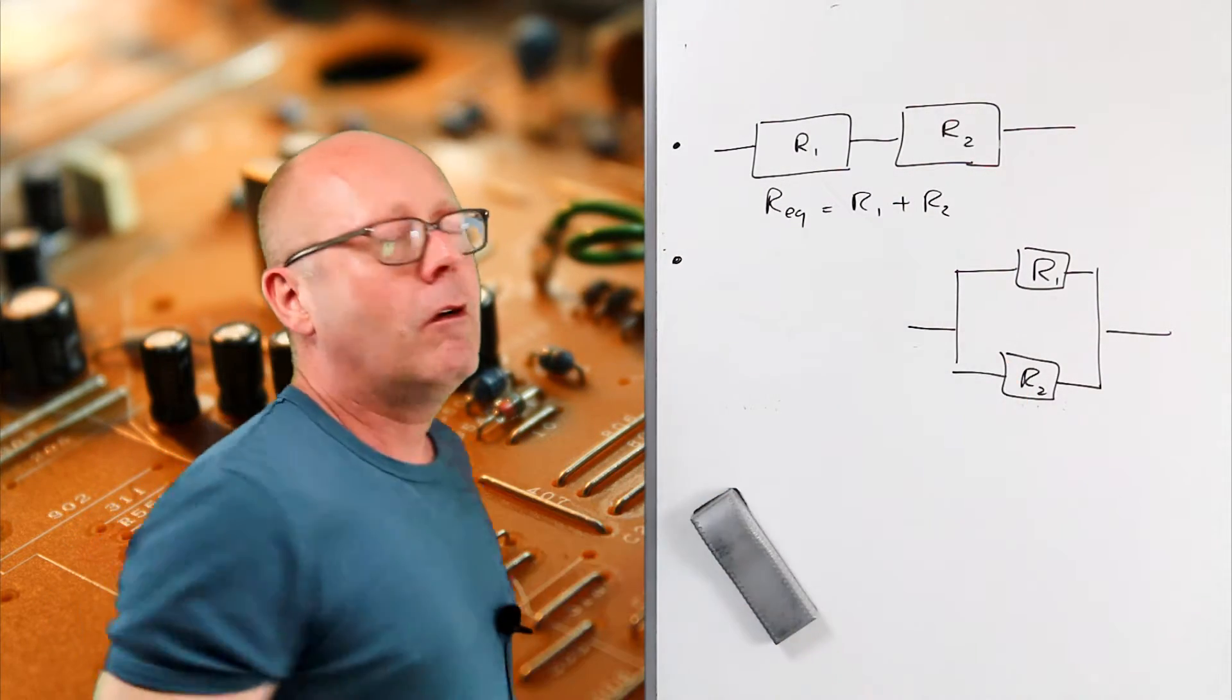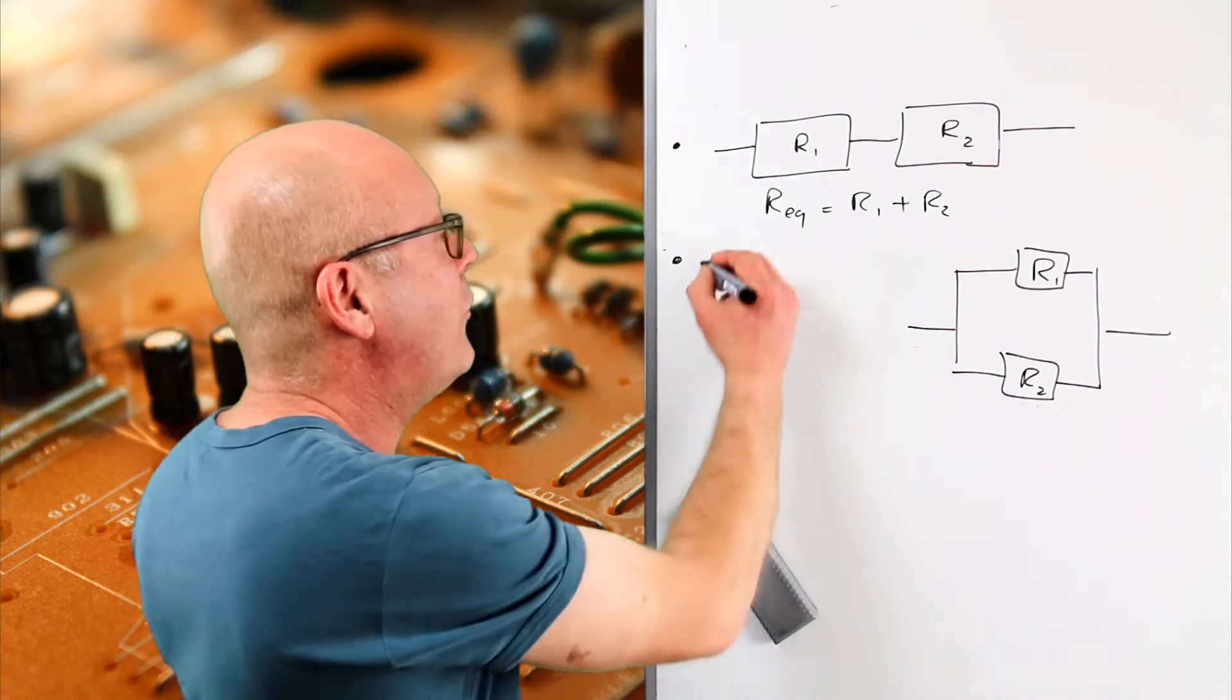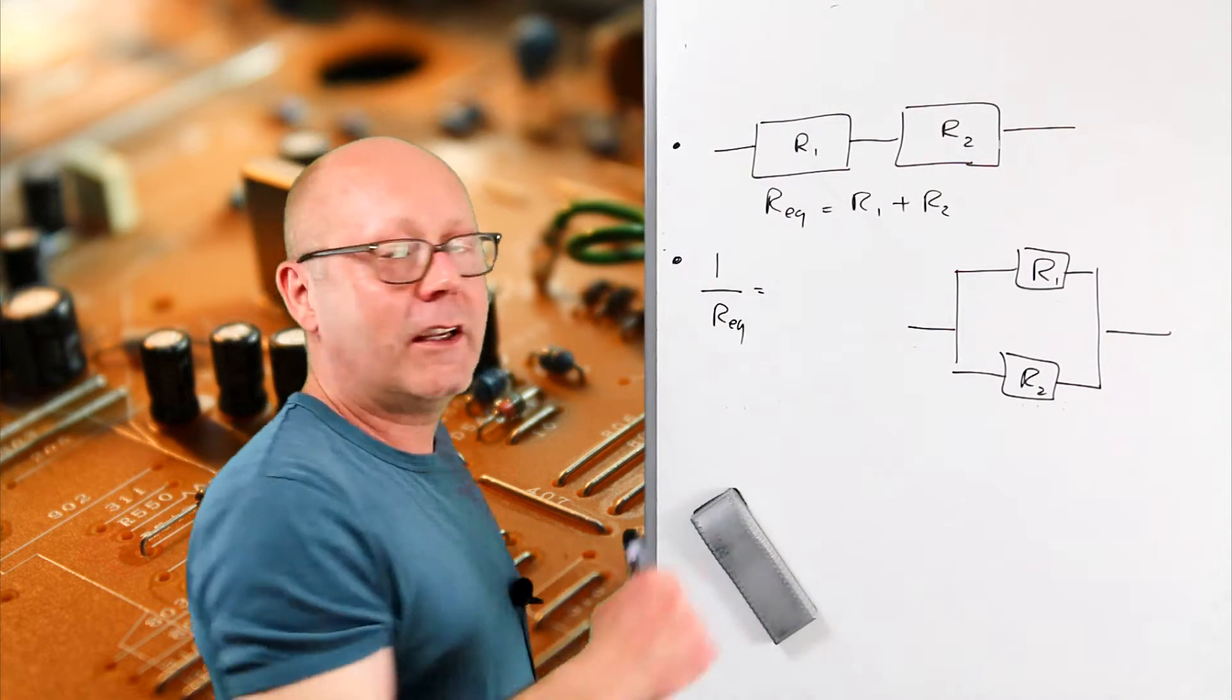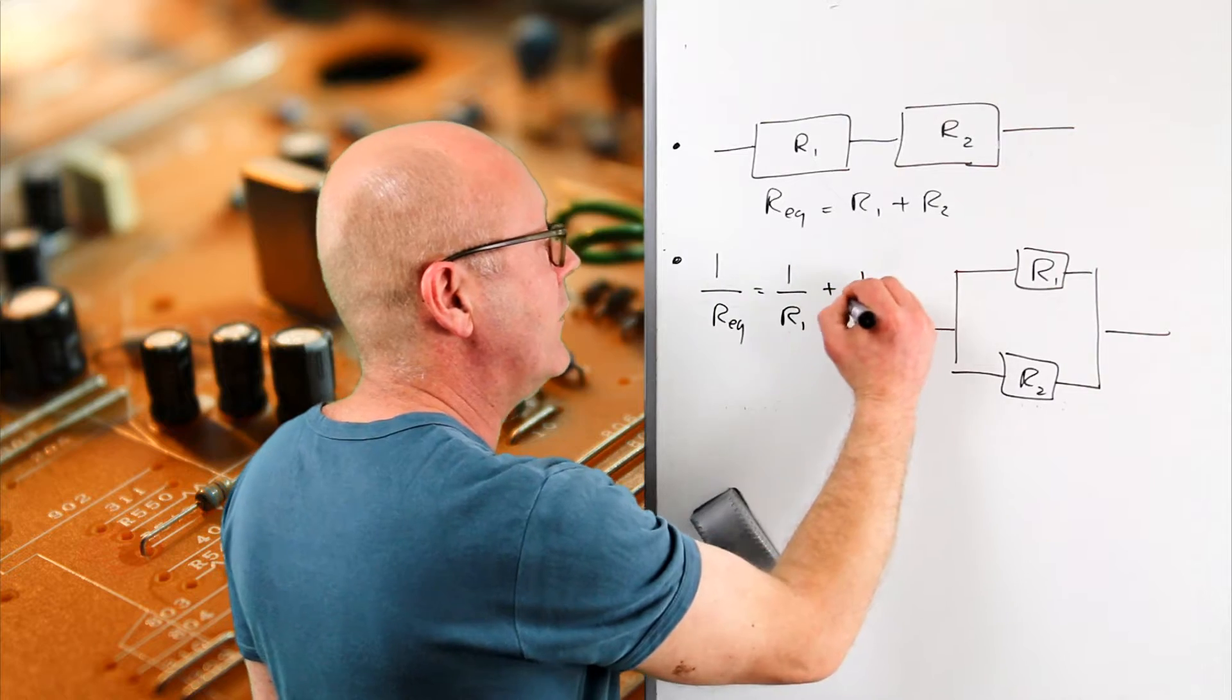But when they're in parallel, the formula given by the combination of Kirchhoff's laws allows you to find that the inverse of the R equivalent is equal to the sum of the inverse of the two resistors in parallel.